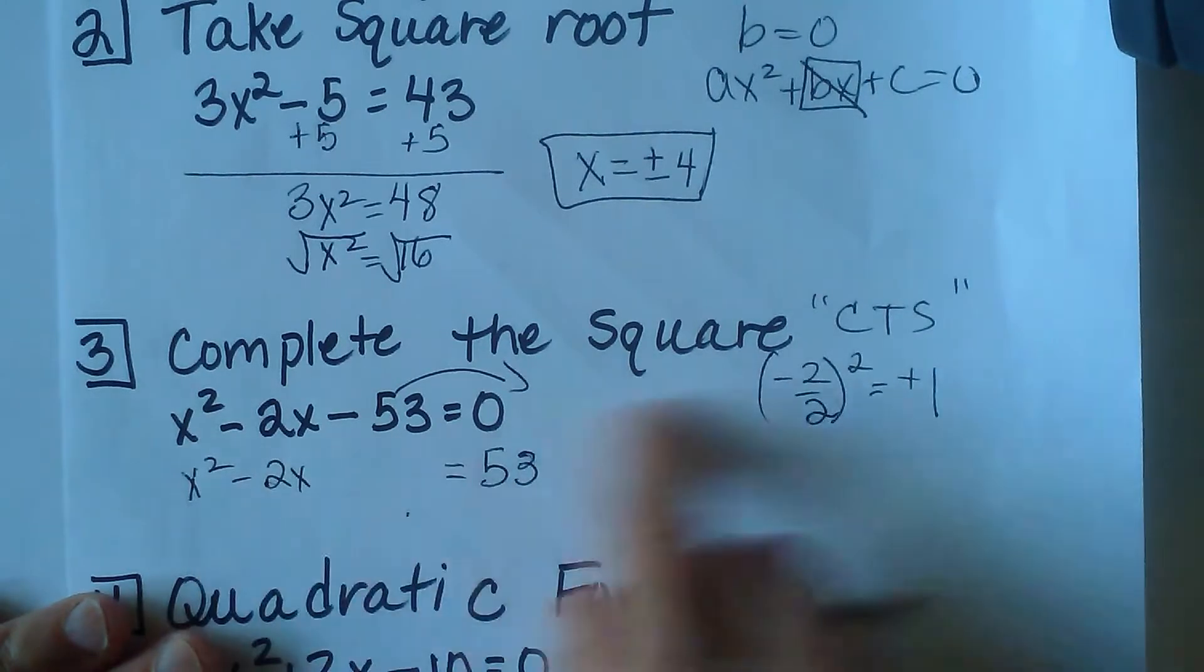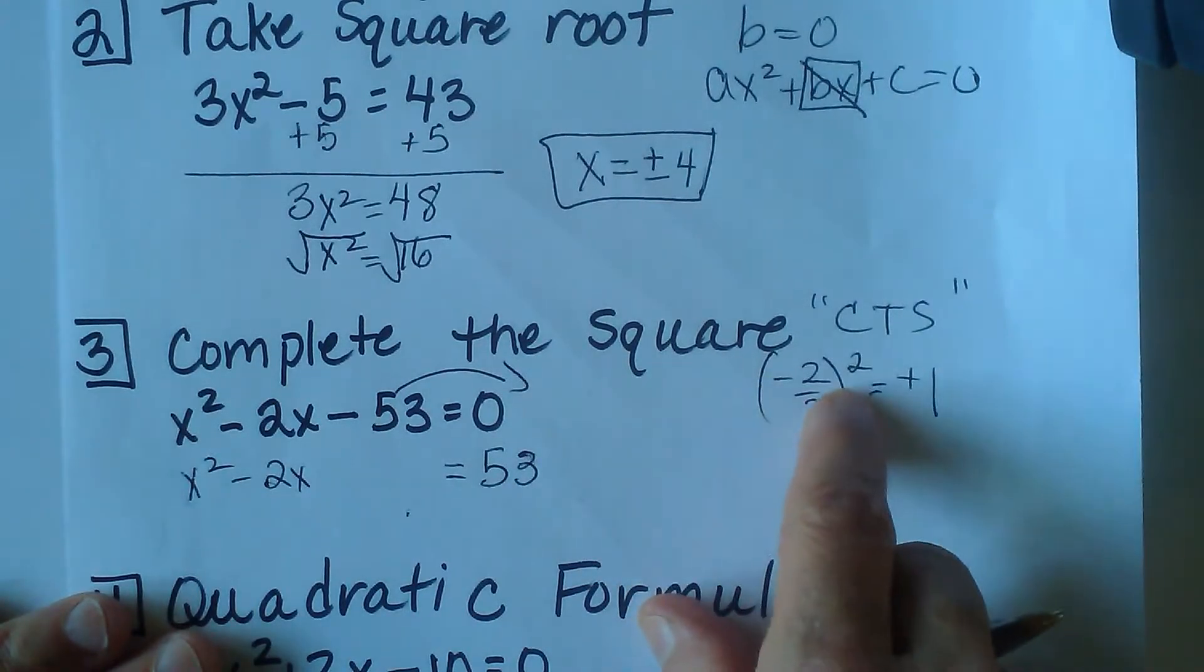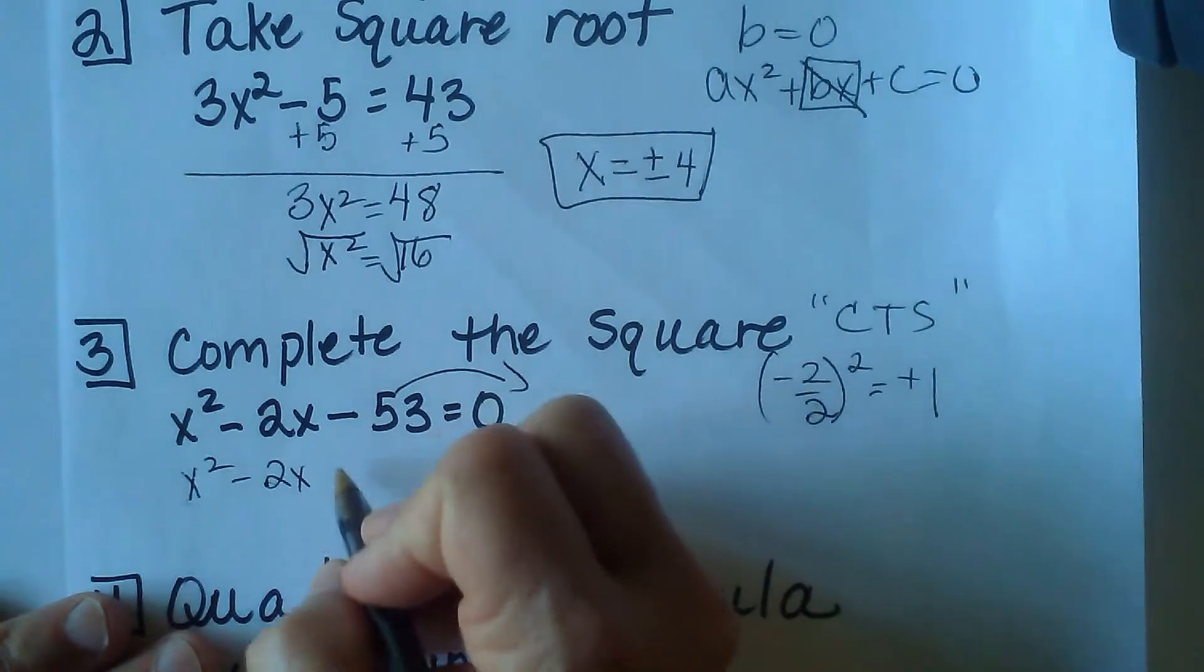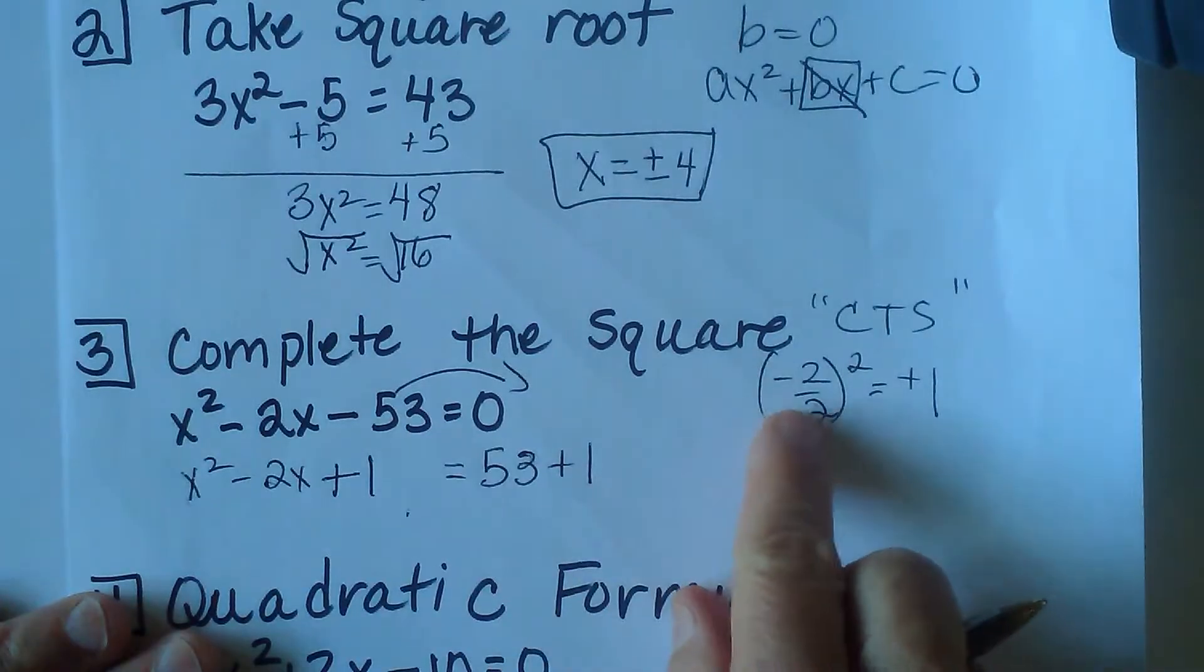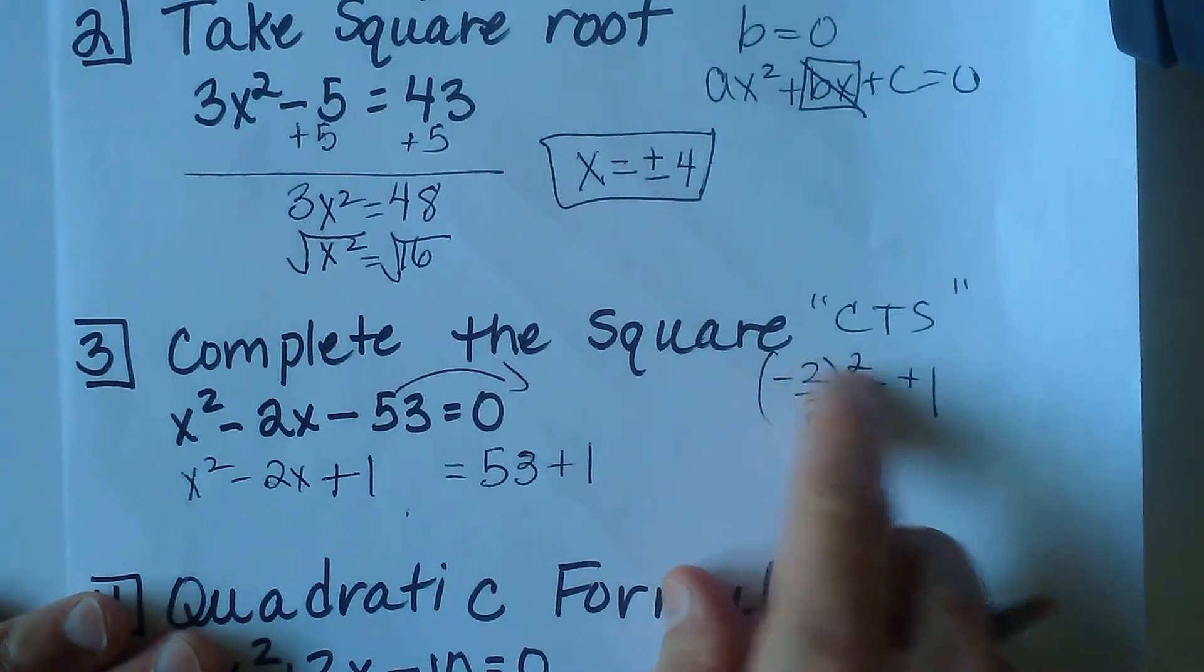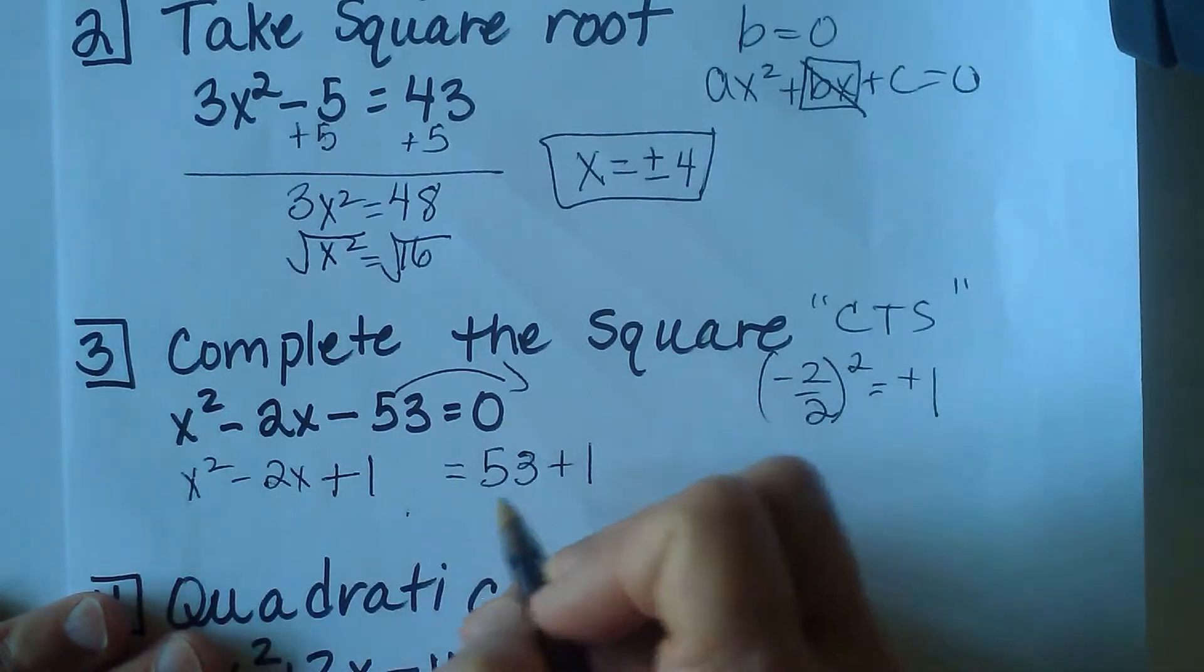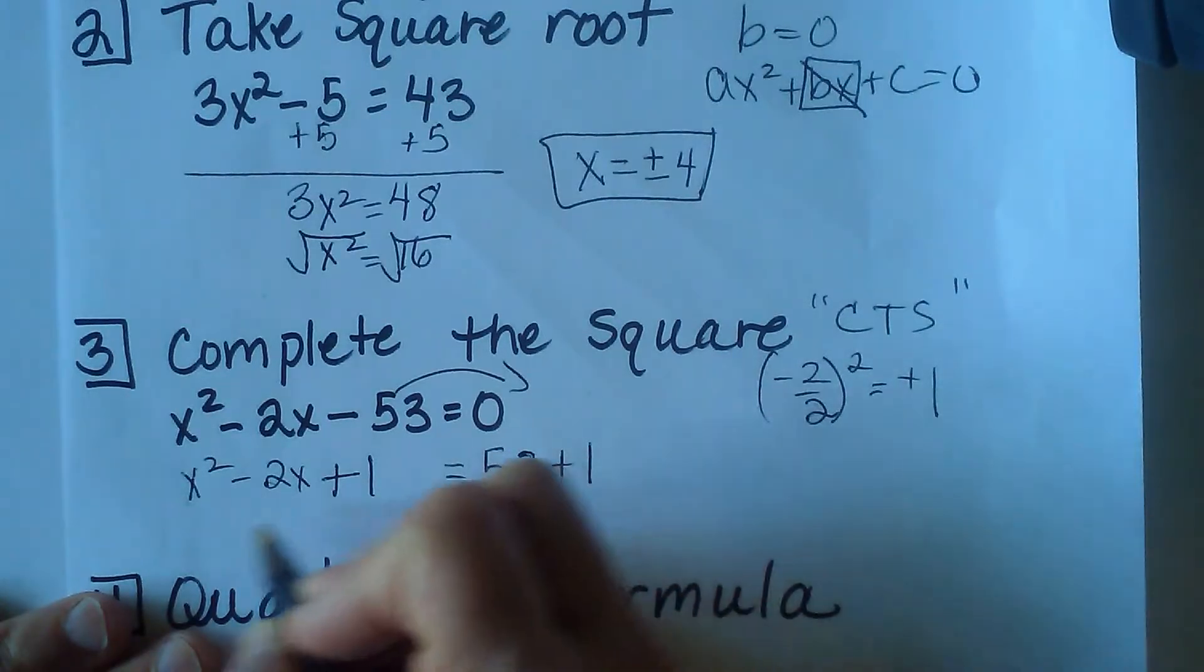You want to move the constant to the other side so it becomes a positive 53. Then you want to take this middle term, half it, and then square it. And then you're going to add it to both sides. So you're going to add 1 to both sides because half of negative 2 is 1 and 1 squared is positive 1.